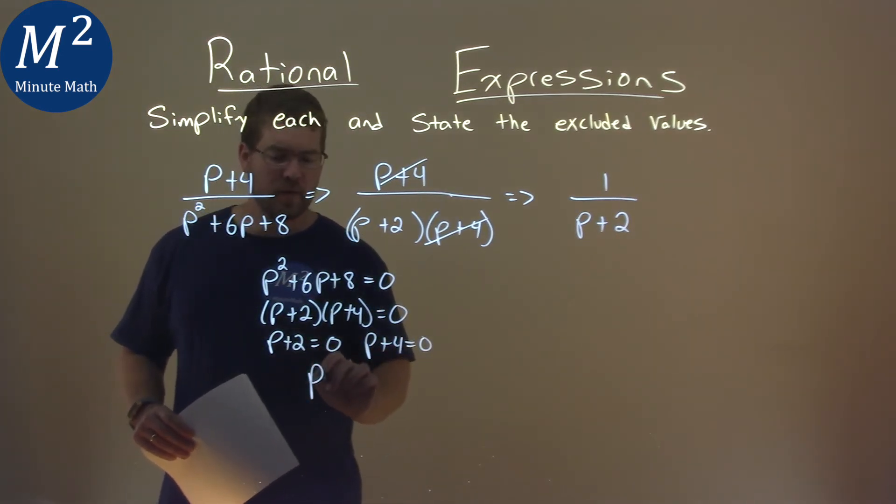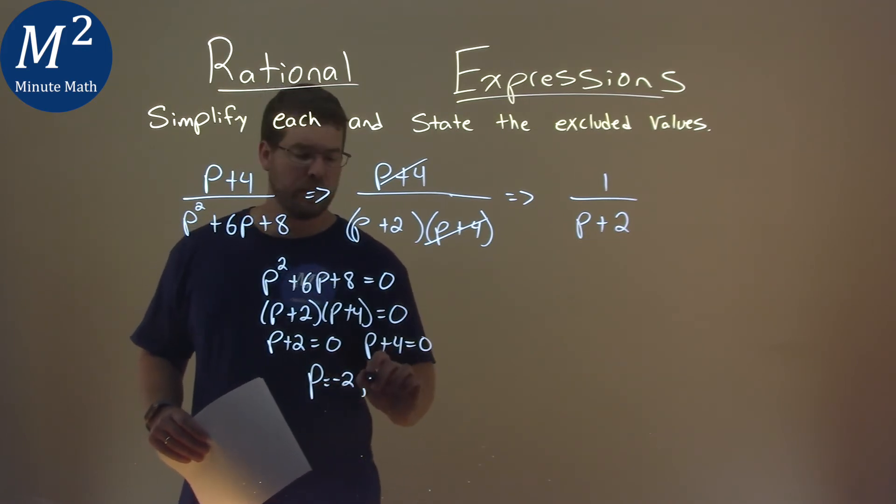When solving for p, we subtract 2 from both sides, would be a negative 2, and subtract 4, would be a minus 4.